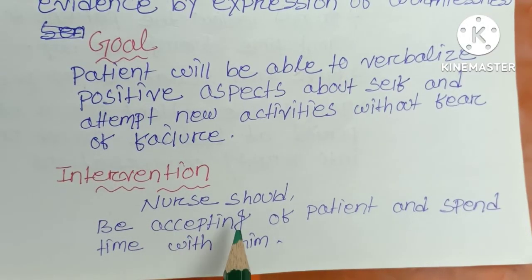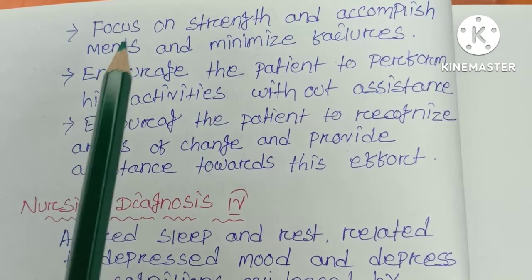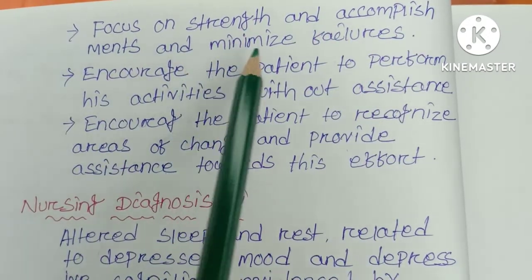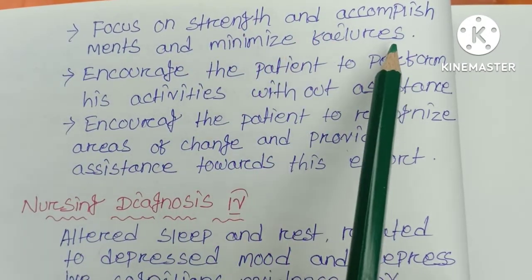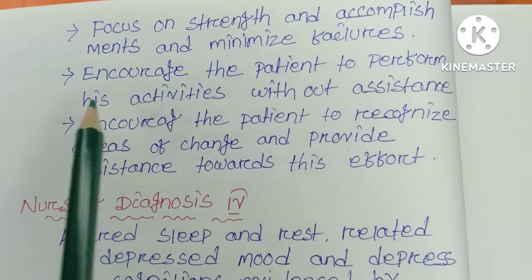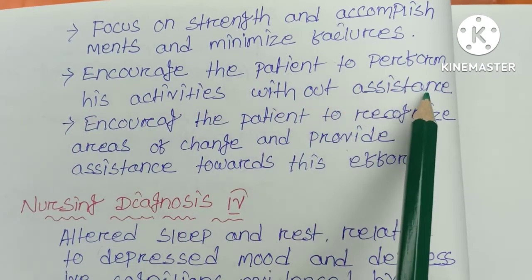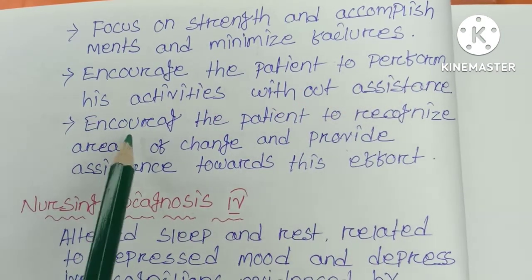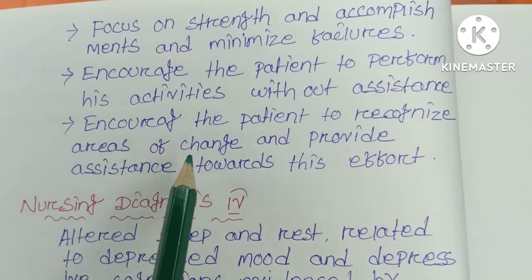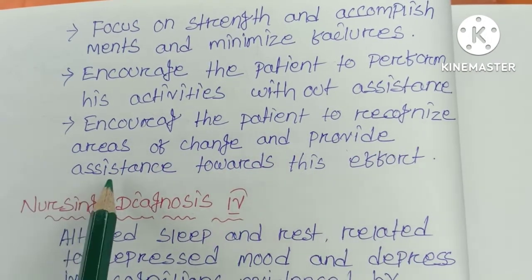Interventions for Nursing Diagnosis 3: the nurse should be accepting of the patient and spend time with them. The nurse should focus on the patient's strengths and accomplishments and minimize failures. The nurse should encourage the patient to perform their activities without assistance, and encourage the patient to recognize areas of change and provide assistance towards this effort.